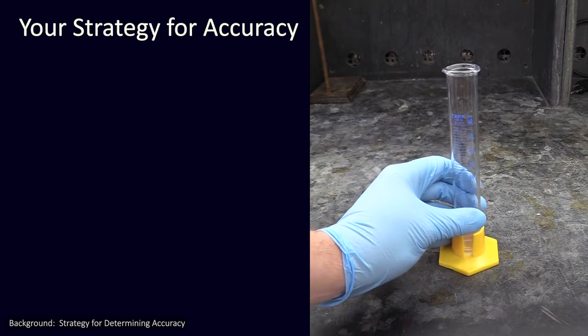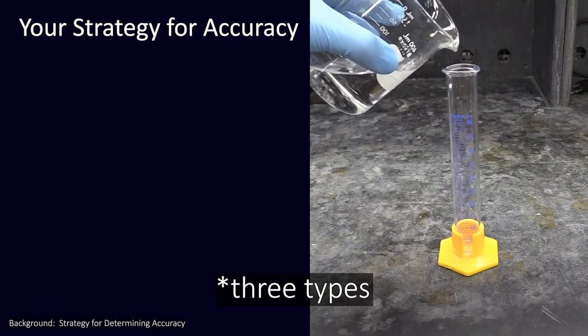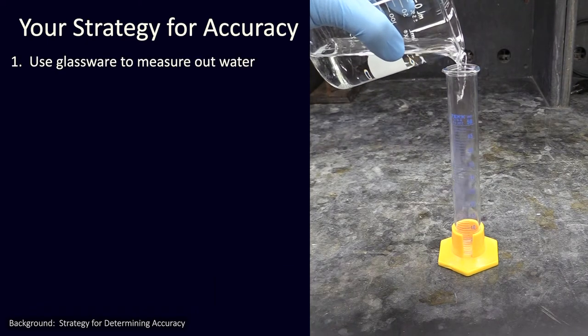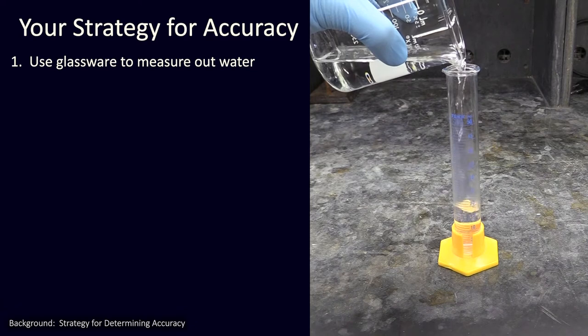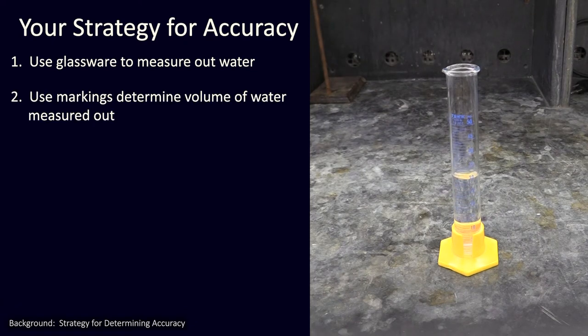As part of this experiment, you are going to evaluate the accuracy of the four glassware types we introduced earlier. To do this, you'll use each piece to measure out some water. As you do this, you'll use the markings on each piece to read what quantity of water you are dispensing with it.